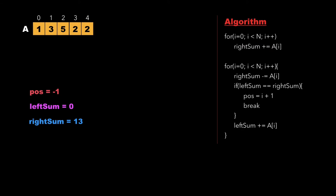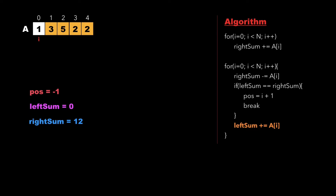After getting the right sum, we again traverse the array from i equals 0 to n. This time we calculate the left sum and check whether left sum equals right sum. At i equals 0, we update right sum as right sum minus a[i], which gives 12. Since 1 is the first element, the left sum is 0. We check if 0 equals 12 — it does not — so we move further and update left sum as left sum plus a[i], giving the left sum value for the next element.